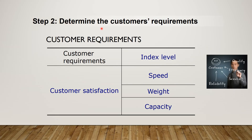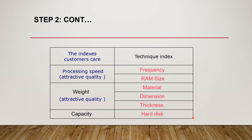Step 2: after identifying the customers, we need to determine the customer requirements for the laptop. We found that the requirements for customer satisfaction are mainly divided into 3 major categories: Speed, Weight, and Capacity. These 3 categories can be further split into smaller parts — frequency and RAM size for processing speed, material, dimension and thickness for the weight category, and hard disk for capacity.